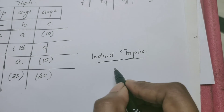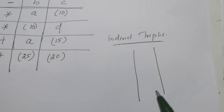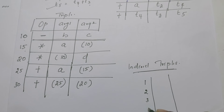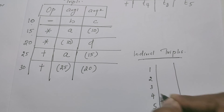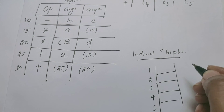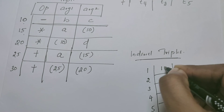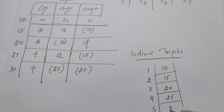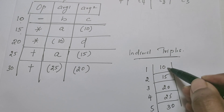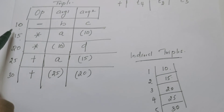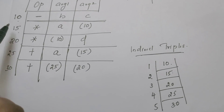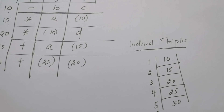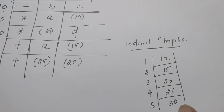Indirect triple is very easy. Indirect triple is nothing but a list of references to the triplets. For example, we consider a list of locations with addresses 1, 2, 3, 4, 5. Location 1 contains address 10, location 2 contains 15, location 3 contains 20, location 4 contains 25, location 5 contains 30. So 10, 15, 20, 25, 30 are the references for the triplet information, and these triplet entries are available at the corresponding addresses. I hope you have understood this example.